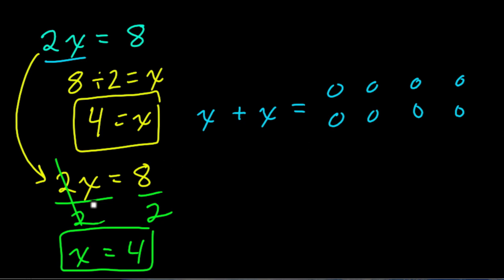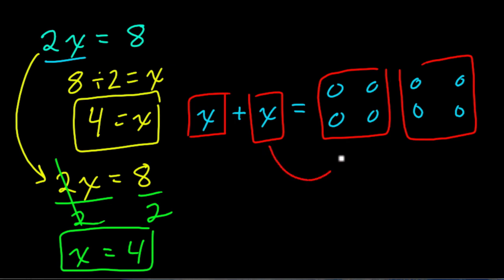So here, when we divided both sides by 2, we divide the x's in 2 groups. And we divide these circles in 2 groups. And you can see that each x equals 4, well, whatever. We don't really know what's in there. But by dividing both sides by 2, we set that up.